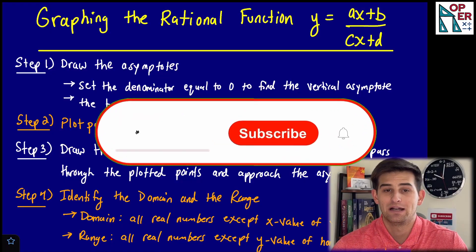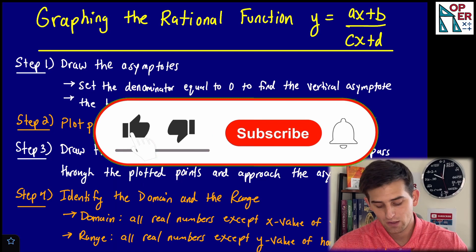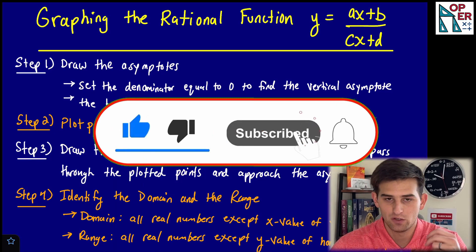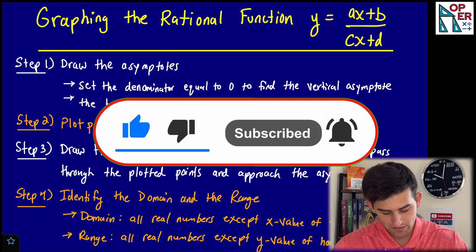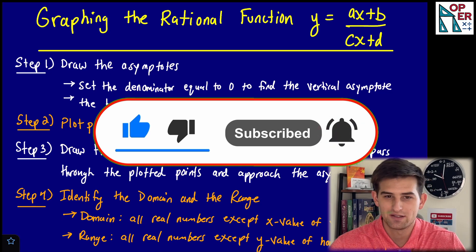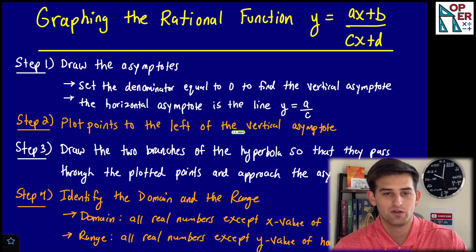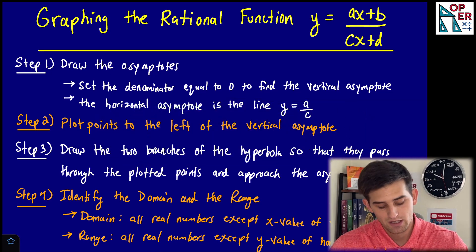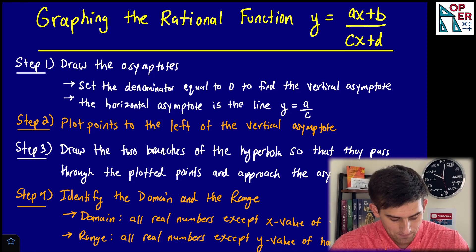Hello everyone, in this video we're going to talk about how we can graph the rational function y equals ax plus b over cx plus d. It's kind of a four-step process — really a three-step process — and step four involves just identifying the domain and the range. Let's work through how we should do this.